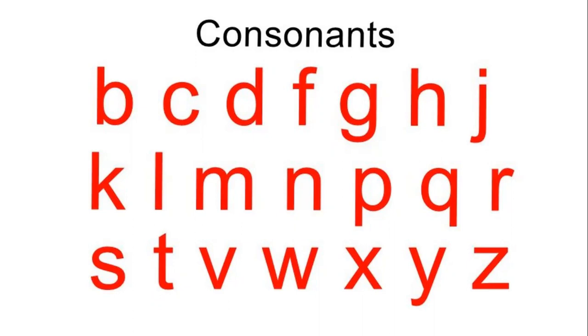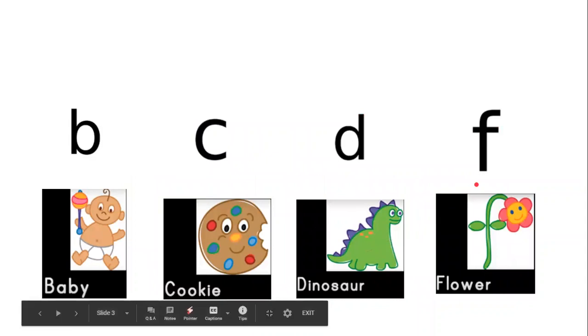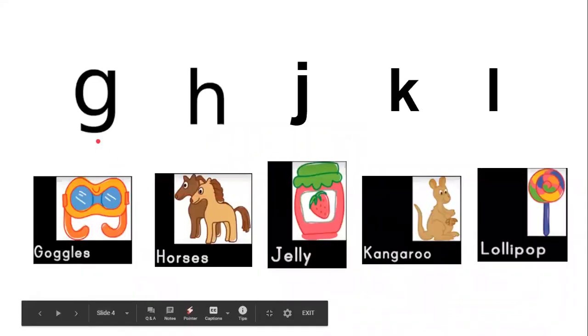So let's look at their sounds. B, baby. K, cookie. D, duck, dinosaur. F, flower. G, goggles. H, horses. J, jelly. K, kangaroo. L, lollipop.